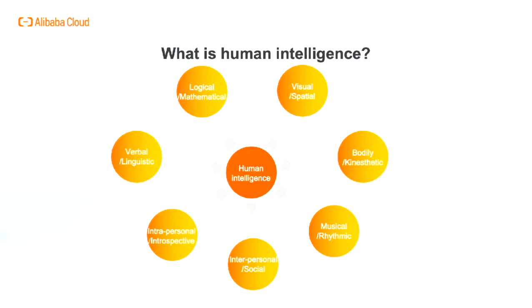For thousands of years, we have tried to understand how we think — that is, how a mere handful of matter can perceive, understand, predict, and manipulate a world far larger and more complicated than itself. The field of artificial intelligence, or AI, goes further still. It attempts not just to understand, but also to build intelligent entities.